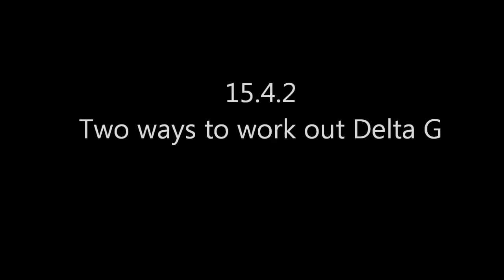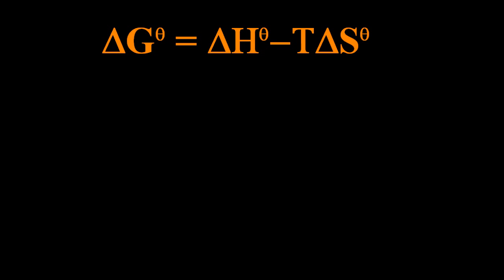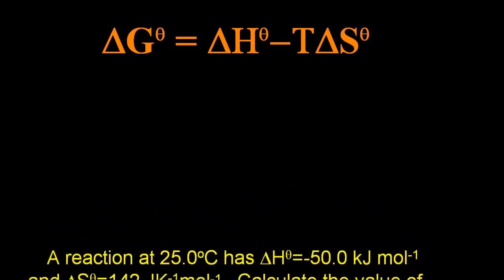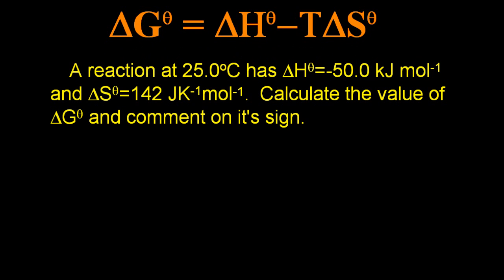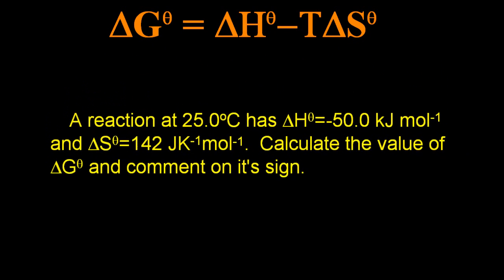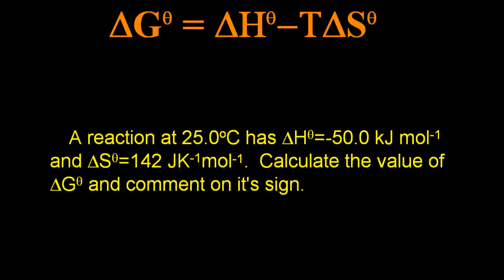Two ways to work out delta G. The first one is using this equation here. If the question is a reaction at 25 degrees C has a delta H of this and a delta S of that, calculate the value of delta G. That little theta sign means standard STP, and comment on its sign.